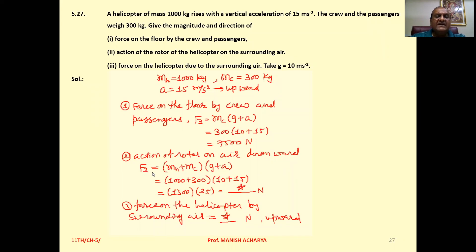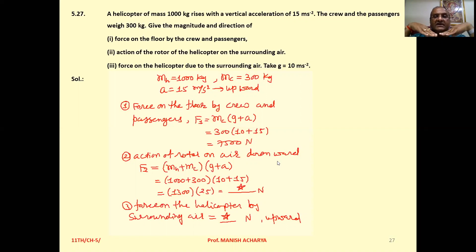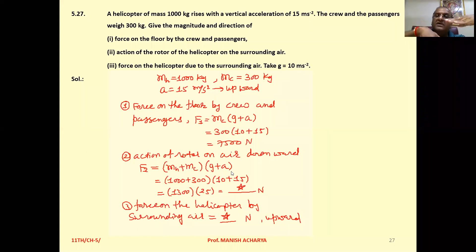Second, action of rotor on air is downward. The force equals total mass of the system — mass of helicopter plus mass of crew — multiplied by (g + a). Since the helicopter accelerates upward, the reaction on air is downward, and g is also downward, so it is g + a again. That gives (1000 + 300) × (10 + 15). Solve this to get the answer.